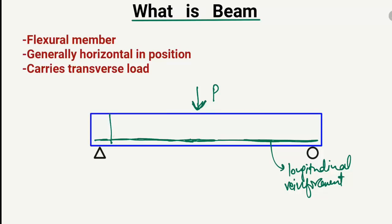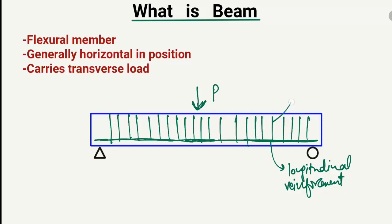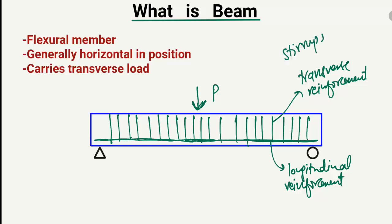The reinforcement provided vertically in the beam is called transverse reinforcement because it runs in the transverse direction. This transverse reinforcement is also known as stirrups. Stirrups are provided in order to take shear resistance — they increase the shear capacity of the beam and resist shear forces.